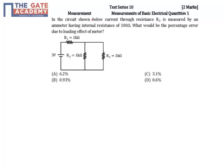In the given problem, there's an electrical network with some resistances and an ammeter connected in series with R3. The question asks: what would be the percentage error due to loading effect of this meter?